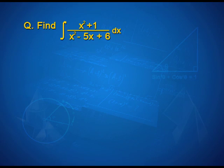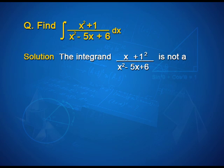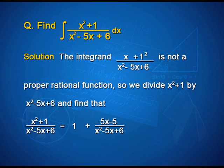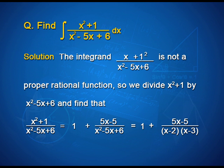Let us solve one more example. Find integral (x²+1)/(x²-5x+6) dx. Here the integrand (x²+1)/(x²-5x+6) is not a proper rational function. So we divide x²+1 by x²-5x+6 and find that (x²+1)/(x²-5x+6) = 1 + (5x-5)/(x²-5x+6), that is 1 + (5x-5)/((x-2)(x-3)).